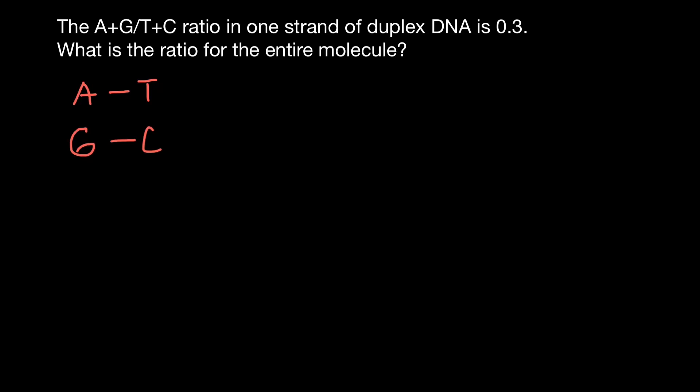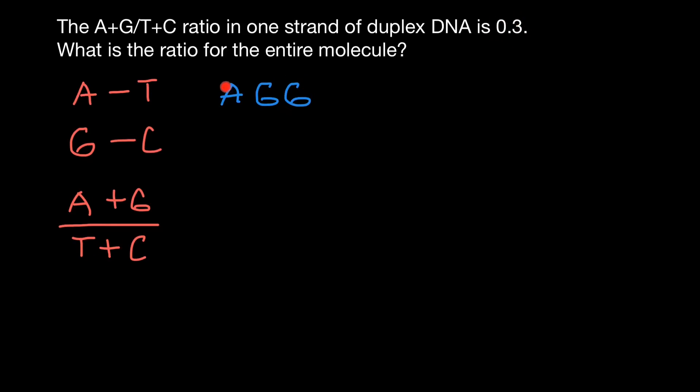Let's find out what we have here. Let me rewrite this as a fraction: adenines plus guanines divided by thymines plus cytosines. On one strand of the DNA, the ratio is 0.3. Let me take some random sequence. Let's say on one strand of the DNA, we have adenine, guanine, and guanine. Our ratio of these bases to those bases is going to be 0.3. So if we take three bases, it can be adenine, adenine, guanine — or three adenines, three guanines. I just took a random sequence; it doesn't matter and doesn't affect our calculations.